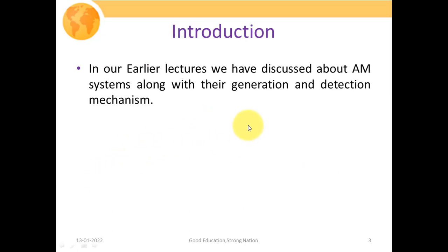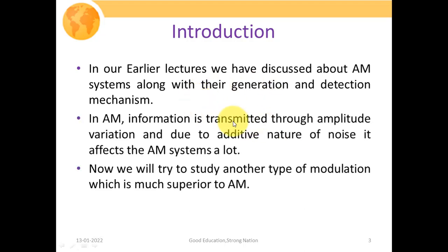In our earlier lectures, we discussed AM systems along with their generation and detection mechanism. We took complete insight into amplitude modulated systems, where information is transmitted through amplitude variation. Due to additive white Gaussian noise (AWGN), it affects AM systems a lot since the nature of AWGN is additive — it simply adds over the amplitude variation, causing distortion at the receiving side.